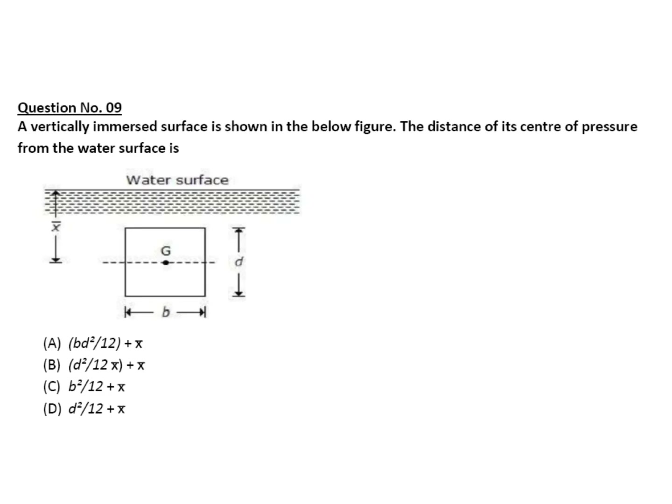So here x bar is the CG distance. Center of pressure h star we have to calculate. Ig sin squared theta, here theta is 90 degrees, so we will put sin squared theta equal to 1. Ig is moment of inertia, it's bd cubed by 12, then area.